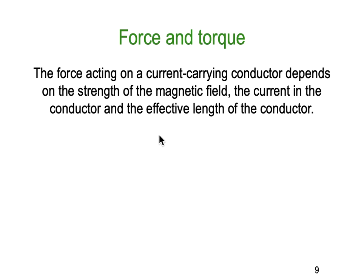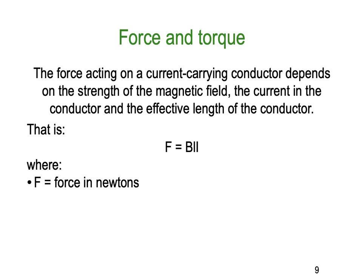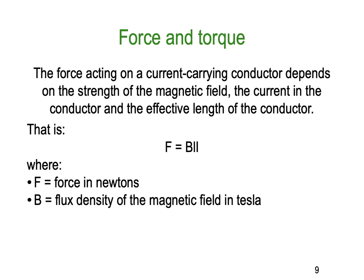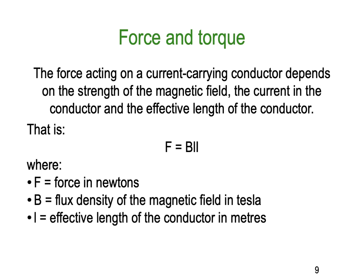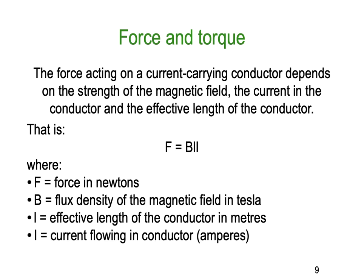Torque is a special form of force. The force acting on a current-carrying conductor depends on the strength of the magnetic field, the current in the conductor, and the effective length of that conductor — it's the exact reverse of what we do with generators. The formula is F = BIL, where F is the force in newtons, B is the flux density in tesla, L is the effective length of the conductor in metres, and I is the current in amperes.